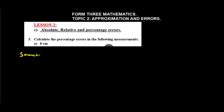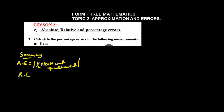Before we solve this, let's look at a summary. The absolute error is the absolute value of half the least unit of measurement. The relative error is the absolute error divided by the actual value. And finally, the percentage error is the relative error times 100.